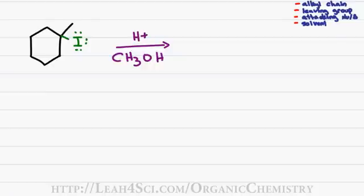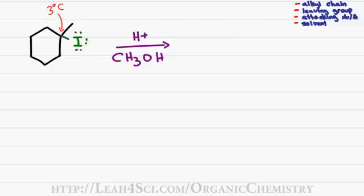Starting with the alkyl chain, we're specifically looking at the carbon that's holding the leaving group. In this case, we have a tertiary carbon which can form a stable carbocation — something we want in an SN1 reaction. This means we can have a 1-type reaction, meaning an SN1 or E1 reaction. So we'll write tertiary carbocation, 1-type.